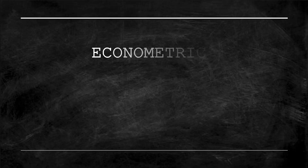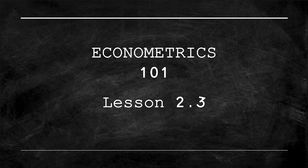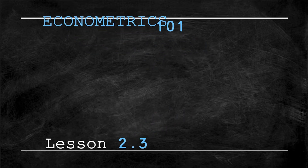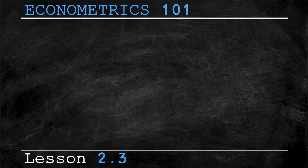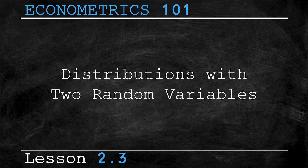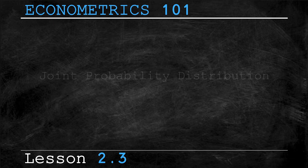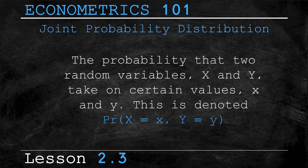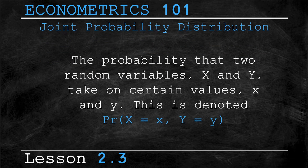Welcome back to the Econometrics 101 series. This week we're covering lesson 2.3 which focuses on probability distributions with two random variables. Let's begin by defining something called a joint probability distribution. This is the probability that two random variables, let's call them uppercase X and Y, take on specific values, let's say lowercase x and y.